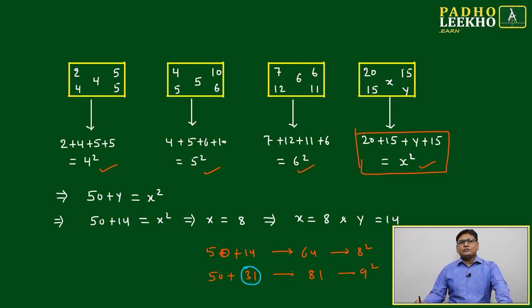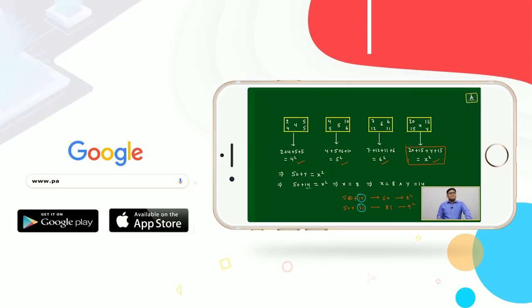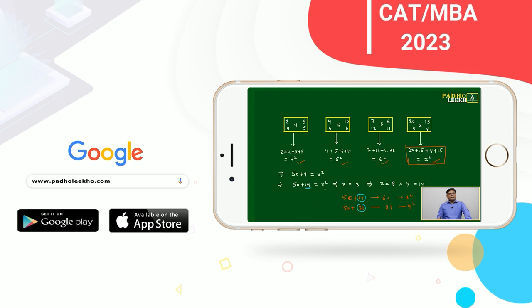Y cannot cross 30. If y is not crossing 30, there's only one possibility: y must equal 14, and accordingly x will equal 8. The values are x equals 8 and y equals 14.